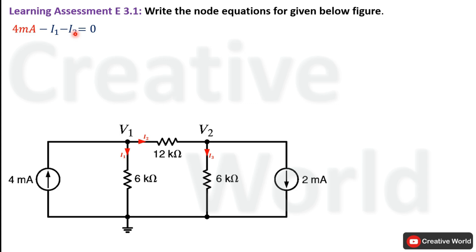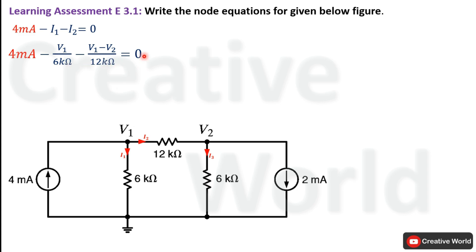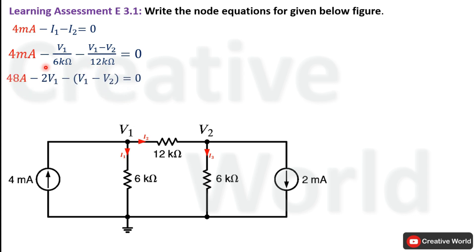Modifying the equation by replacing I1 with V1/6 kΩ and I2 with (V1 − V2)/12 kΩ. To eliminate the denominator values we multiply both sides by 12 kΩ. The product of 12 kΩ and 4 mA gives 48. The product of 12 kΩ and V1/6 kΩ results in 2V1.